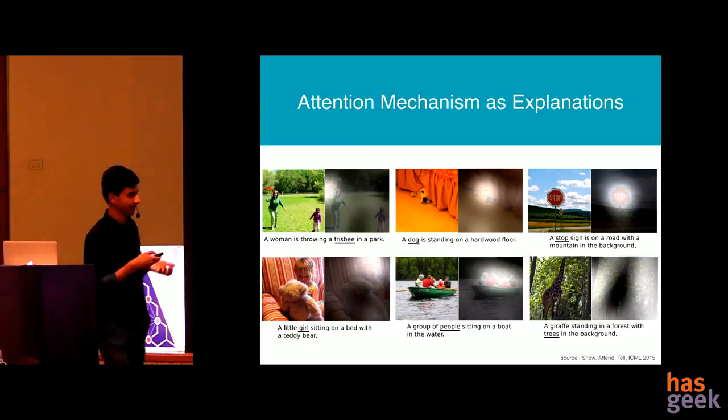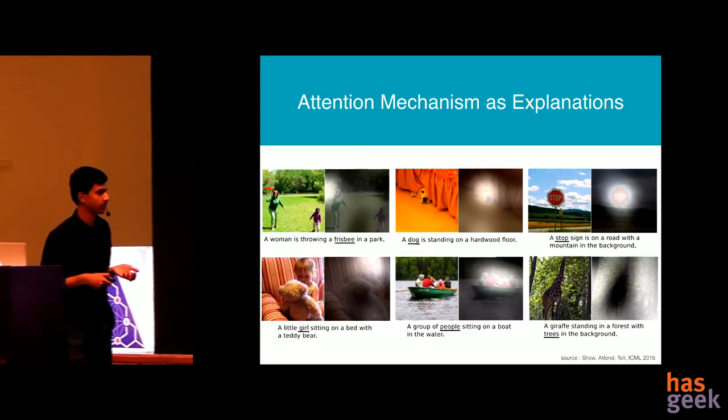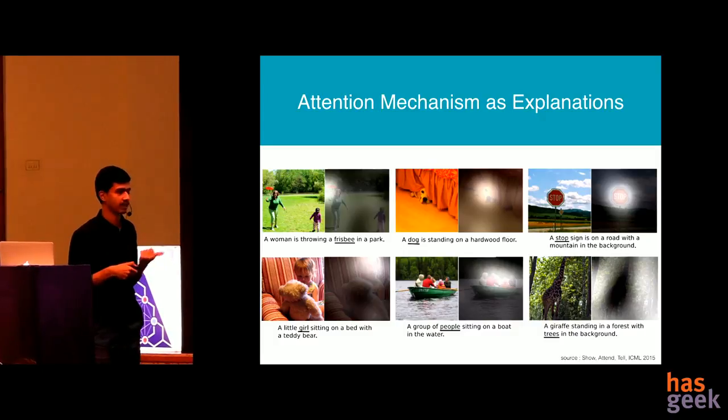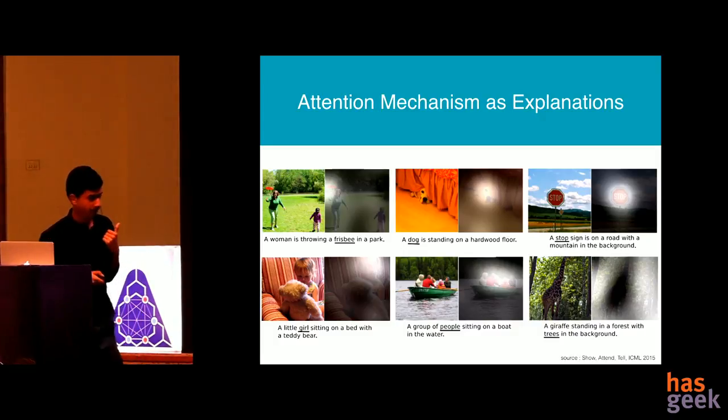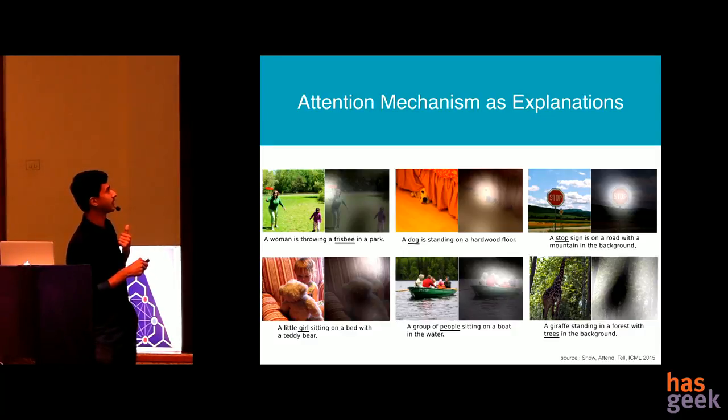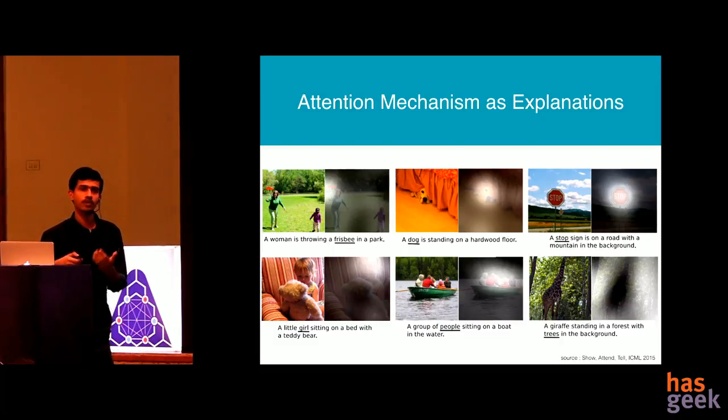So again, this is another example of attention. This is a famous paper called show, attend, tell. It came out in 2015. And here you see a woman is throwing a Frisbee in a park. So you see Frisbee underlined and you see that the model is paying attention to the portion of the image where the Frisbee is. So this is again an intuitive explanation that you can give for the model predicting in a particular way.